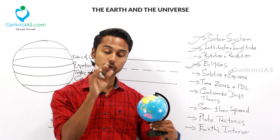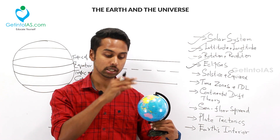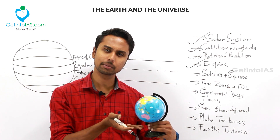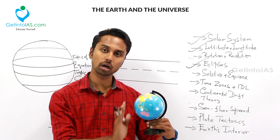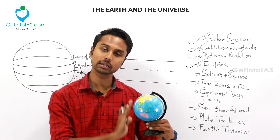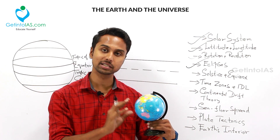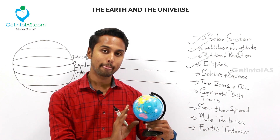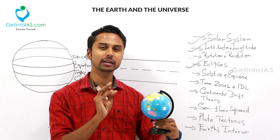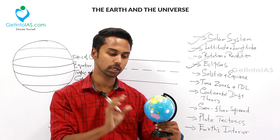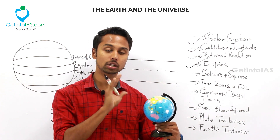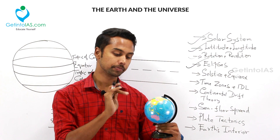During northern solstice, what happens in the southern hemisphere? Because the southern hemisphere is not receiving that much amount of sun's rays, there will be shorter days only. The amount of daylight will be very short. That is about northern solstice.